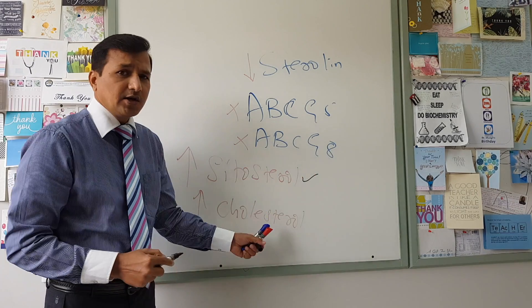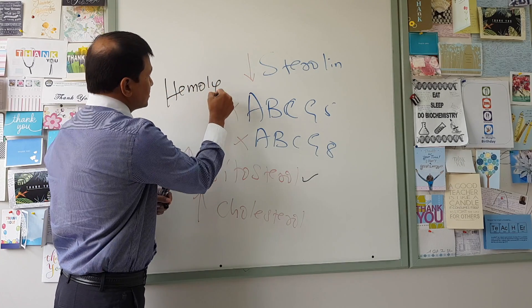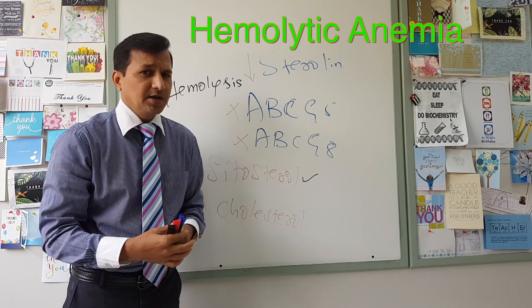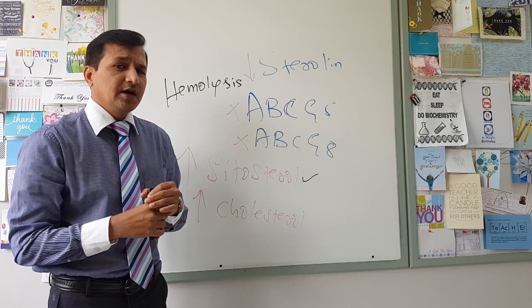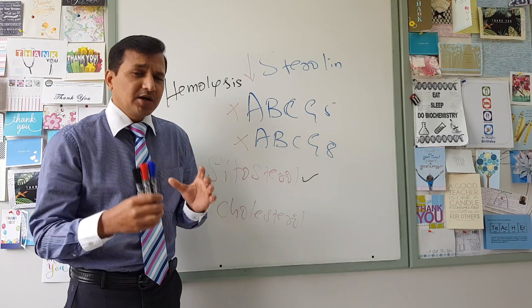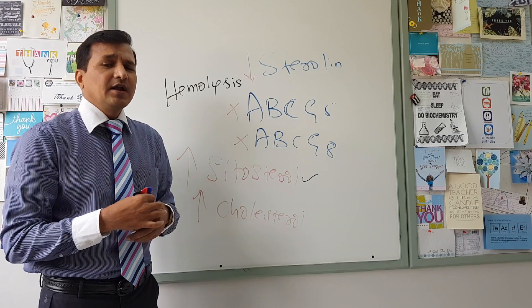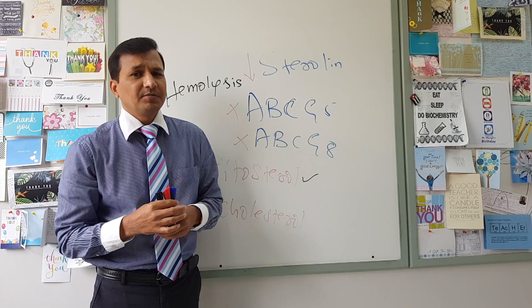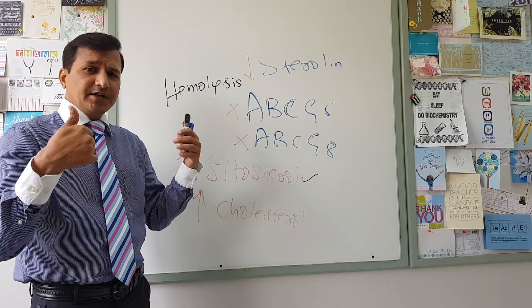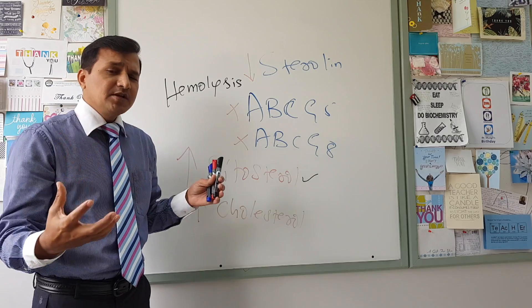Most importantly, one of the diagnostic features of sitosterolemia is elevated sitosterol in the blood along with elevated cholesterol. Patients with sitosterolemia also show hemolytic anemia — there will be hemolysis, meaning red blood cells will break open. Why does hemolysis occur? It is because sitosterol becomes part of the red blood cell membrane. This is an abnormal sterol and it leads to increased rigidity or stiffness of the red blood cell membrane, causing the red blood cells to break open, giving rise to hemolytic anemia. This will increase blood bilirubin levels, giving rise to jaundice.